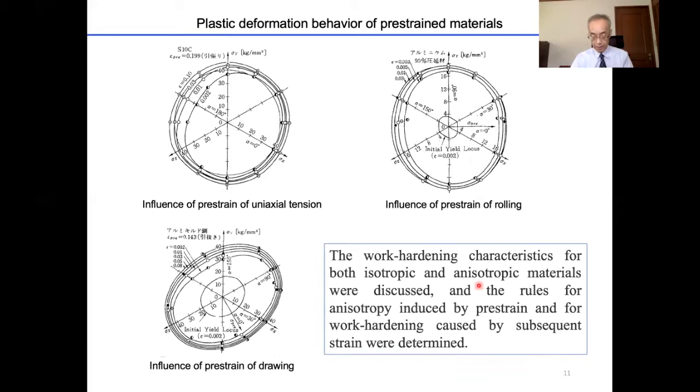The work hardening characteristics for both isotropic and anisotropic materials are discussed. The rules for anisotropy induced by pre-strain and the work hardening caused by subsequent strain were determined. An equation which represents the yield surface for large subsequent strain of pre-strained materials was proposed. These figures show some examples of measured yield locus of pre-strained materials.